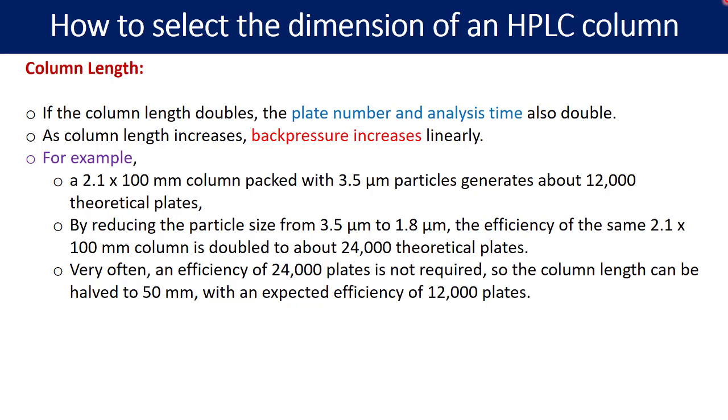Very often an efficiency of 24,000 plates is not required, so the column length can be halved to 50 mm. We have the 100 mm column originally but you can reduce the column length to 50 mm, with the expected efficiency of 12,000 plates. The analysis time will be cut in half with this shorter column. If you have the shorter column with the reduced particle size, your analysis time will certainly get reduced.